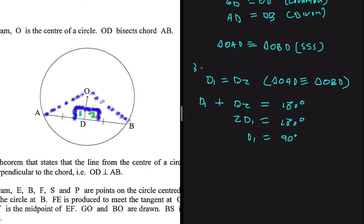We have proved that D1 is 90°, and consequently D2 is also equal to 90°. We can now conclude that OD and AB are perpendicular to each other, because D1 equals 90°.